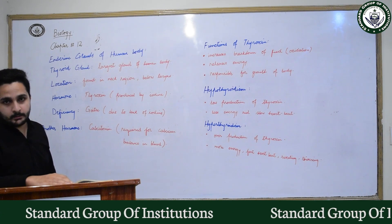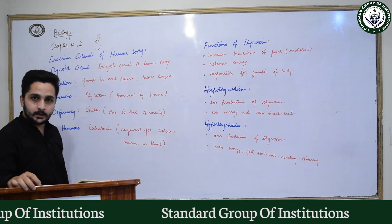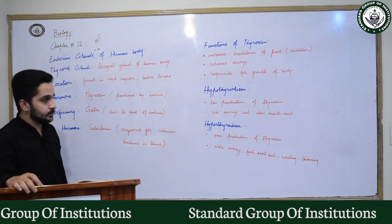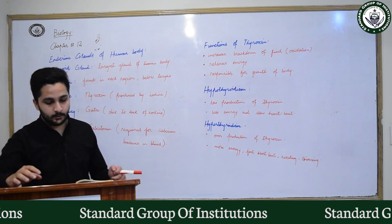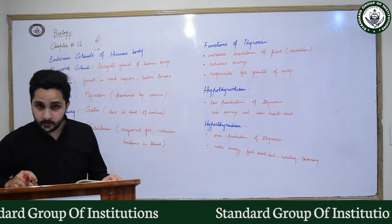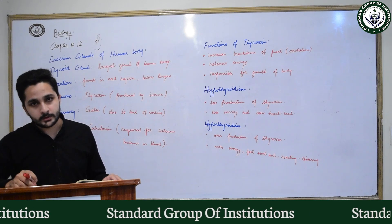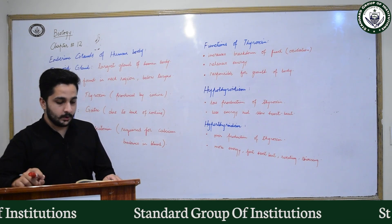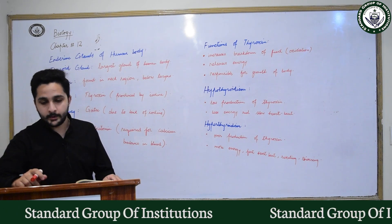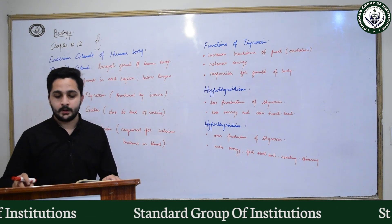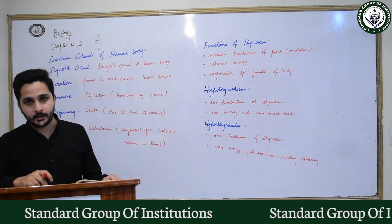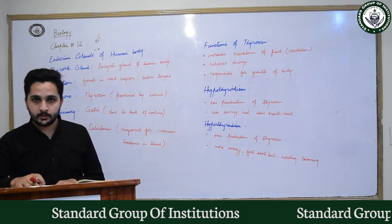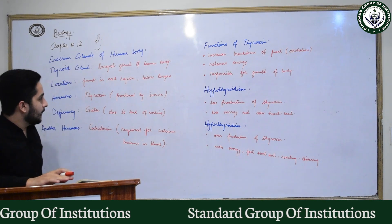In the last two lectures, we have studied the pituitary gland — its structure, location, and division. We learned that the pituitary gland is a pea-shaped gland in the brain, divided into two lobes: anterior and posterior. We studied hormones like somatotrophin, vasopressin, oxytocin, and TSH, including their functions and what deficiency or excess can cause.